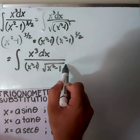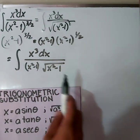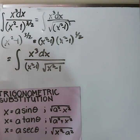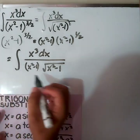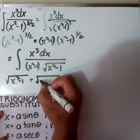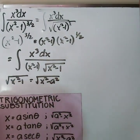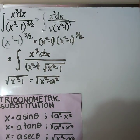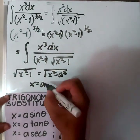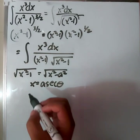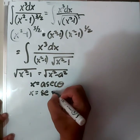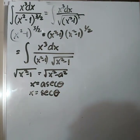Now we can apply trigonometric substitution to this radical expression. Our radical expression is the square root of x squared minus 1, which is written in the form square root of x squared minus a squared. So if we have x squared minus a squared, we apply x equals a secant theta. Since a squared equals 1 and the square root of 1 is 1, we have x equals secant theta.